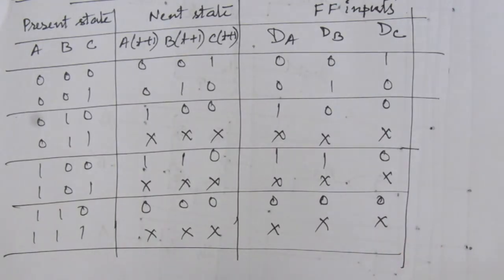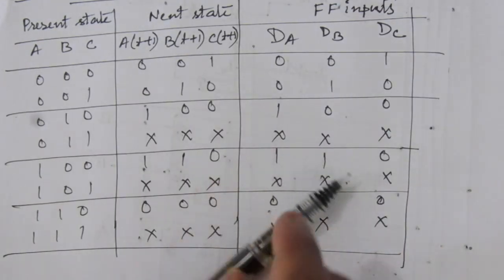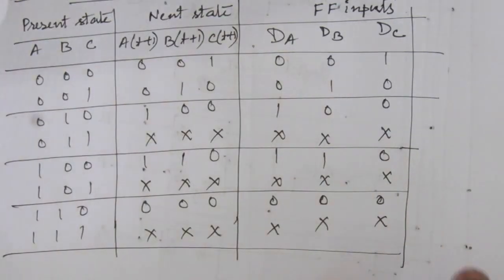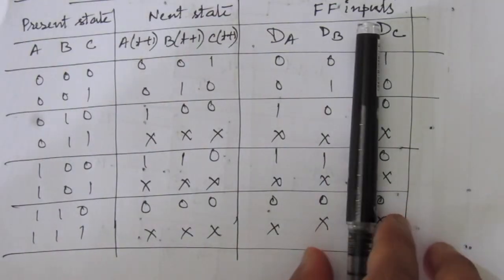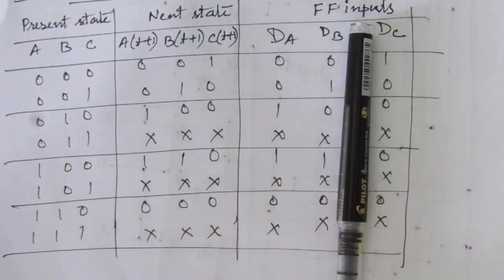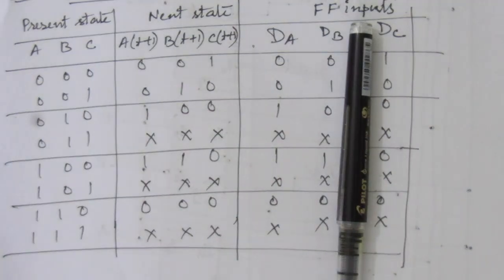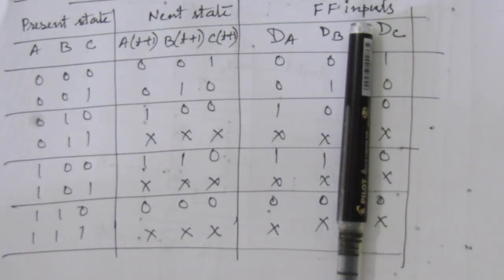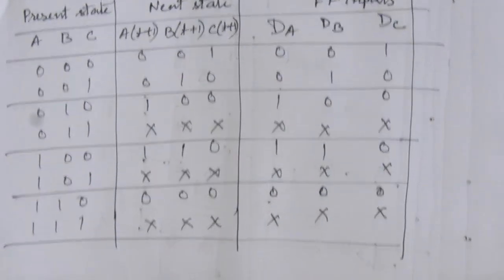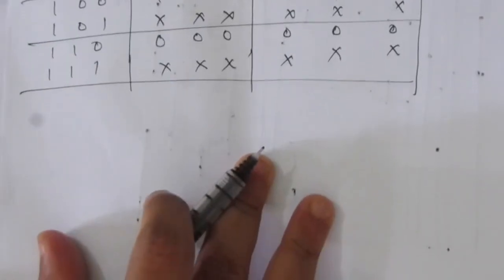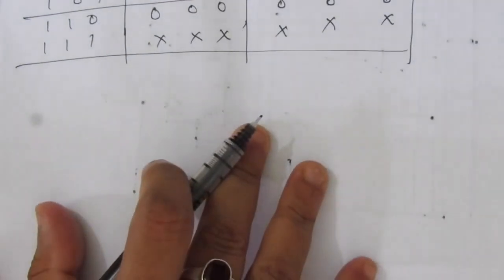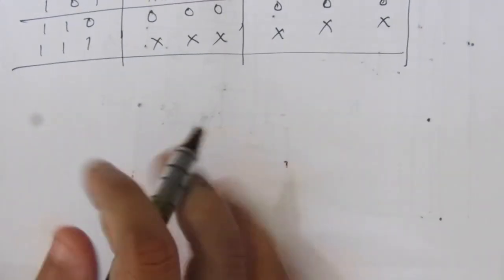Now we have the state table. From this state table, we have to find out the expressions for DA, DB, and DC so that we can make the design. Let us find out these expressions using K-maps.